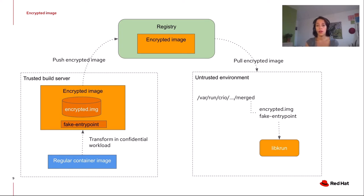CRI-O extracts the encrypted image from the tarball and places it in a known location so that libkrun is able to find it. Libkrun already expects this special form and knows how to pass it to the virtual machine. Together with the kernel command line obtained from the secret and LUKS, it can simply boot and deploy the confidential workload. The decryption of LUKS is done inside the trusted environment. This is basically the architecture and flow for deploying a confidential workload using libkrun and Kubernetes.